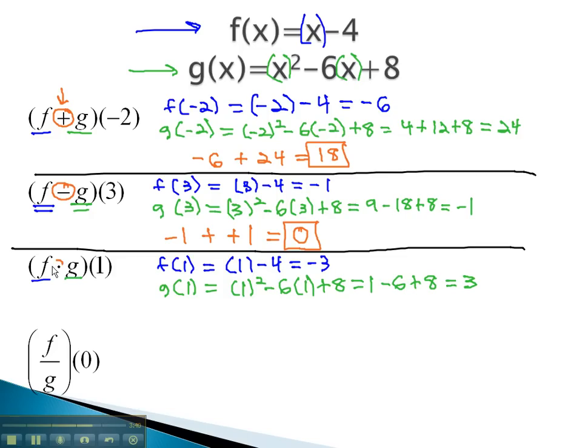This notation wants us to multiply the answers together. Negative 3 times 3 is equal to negative 9.